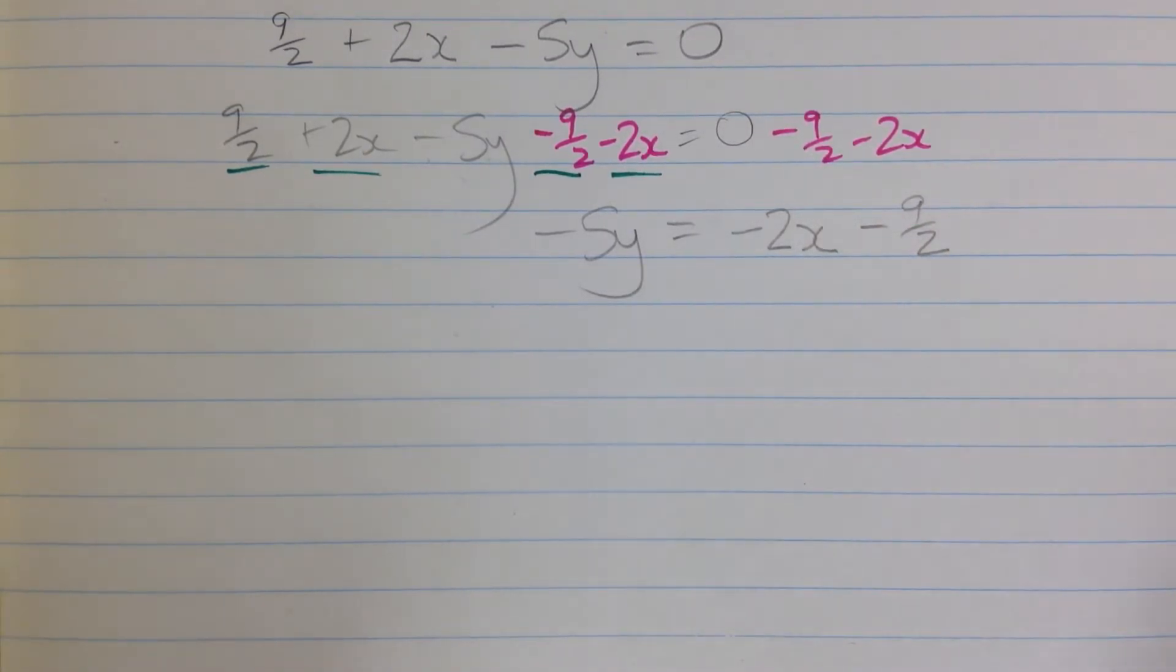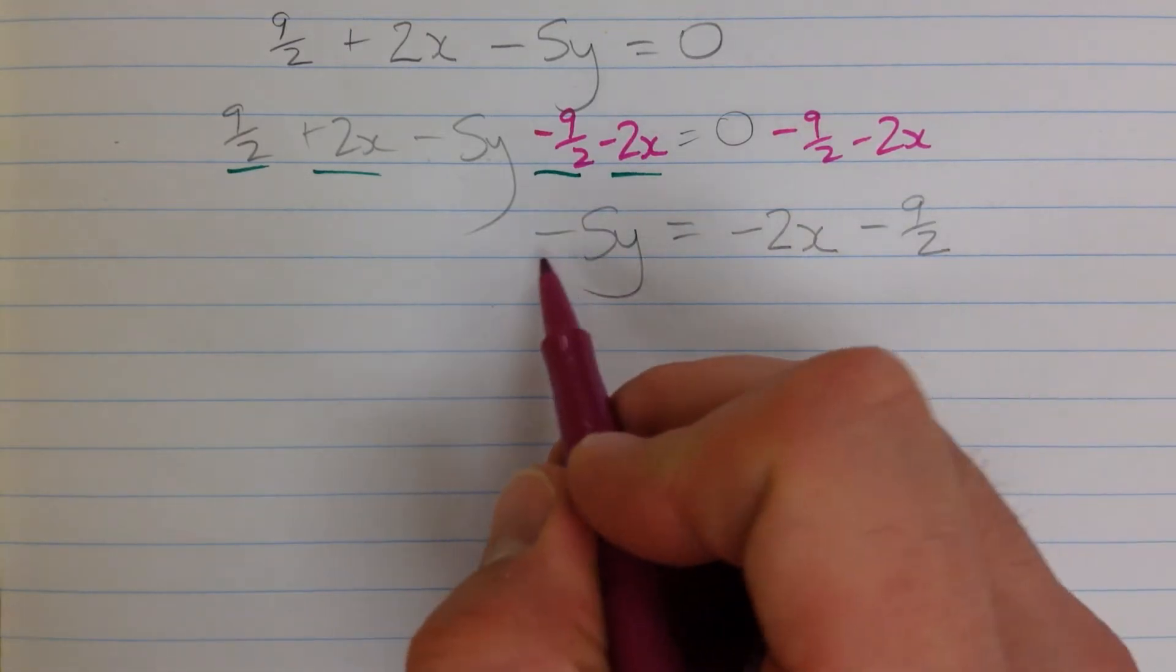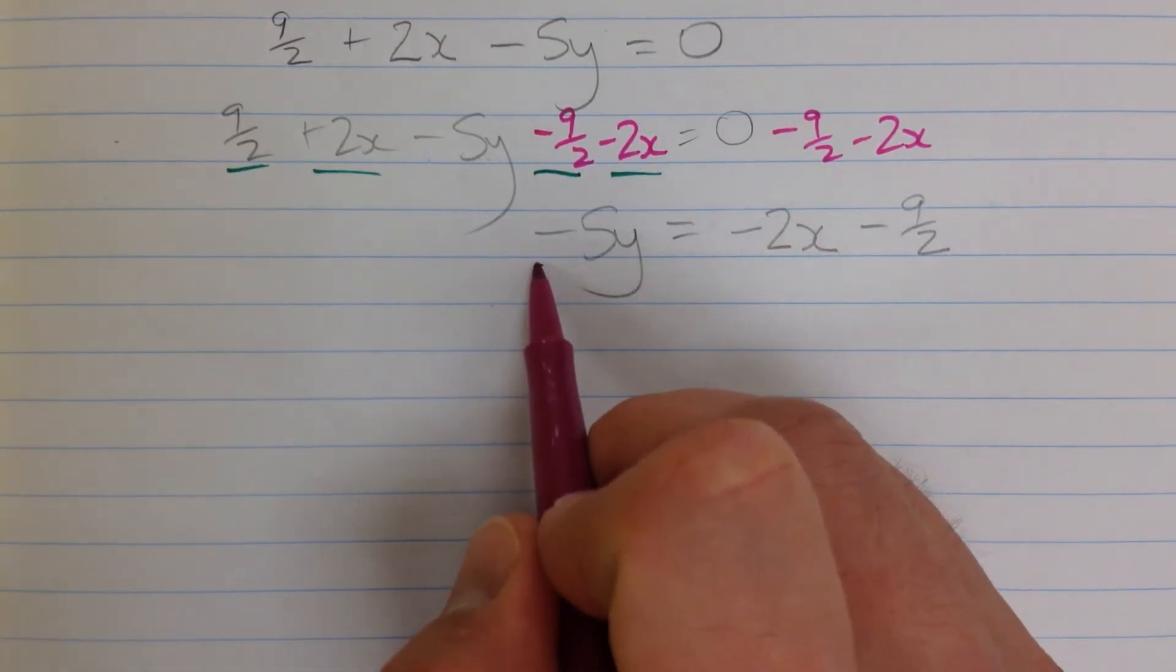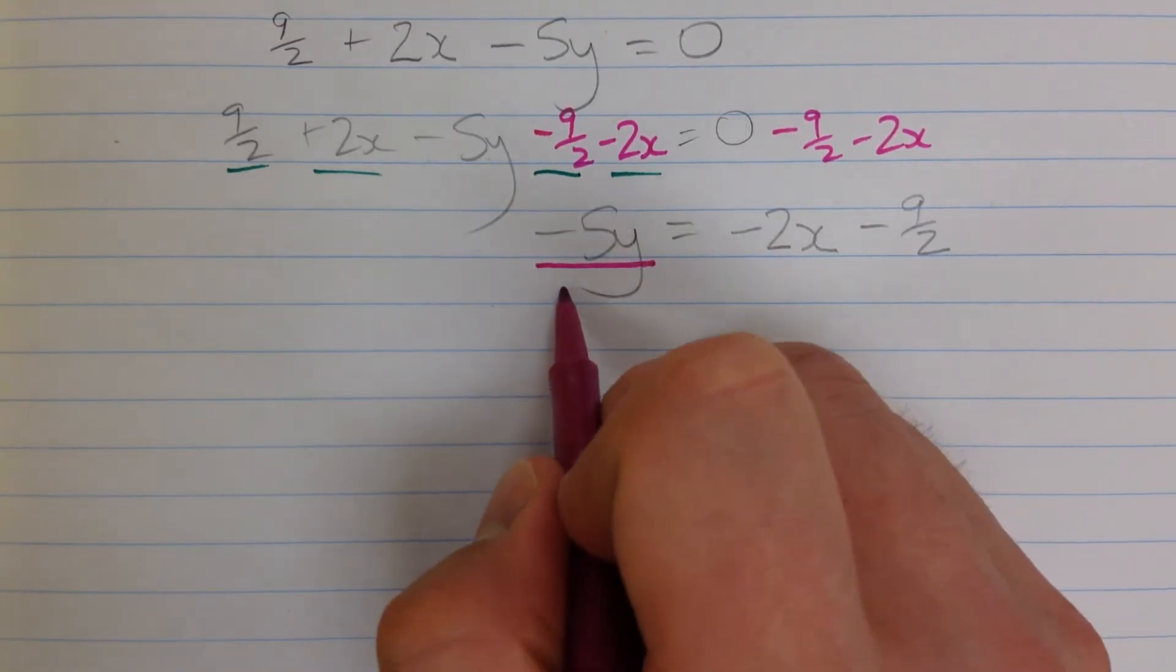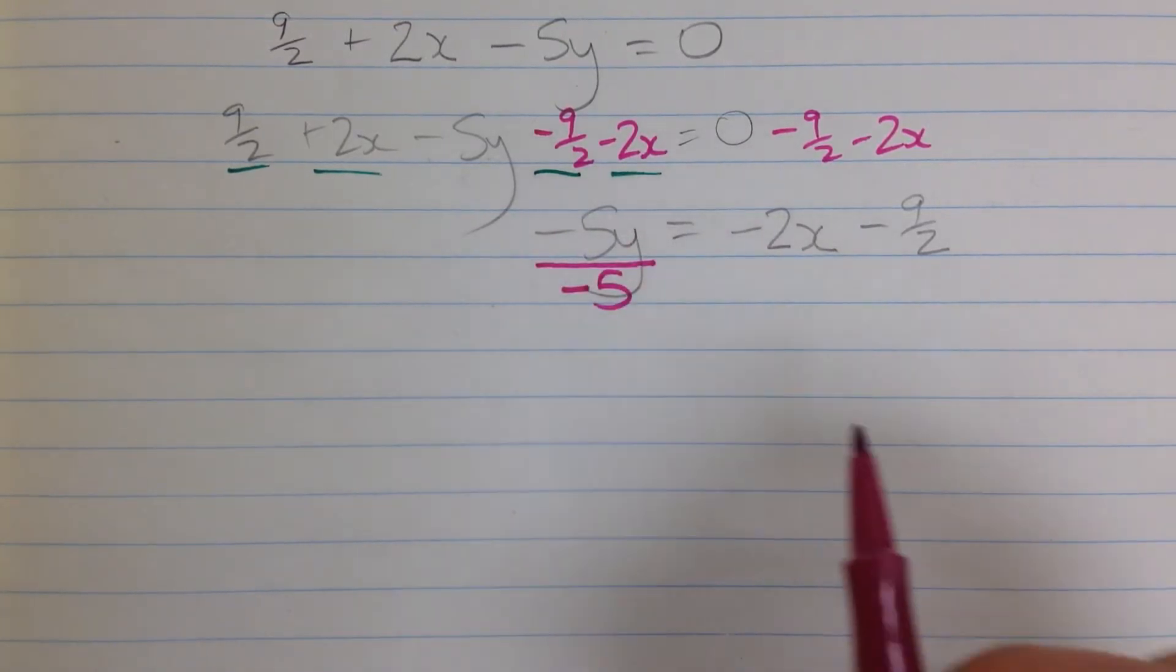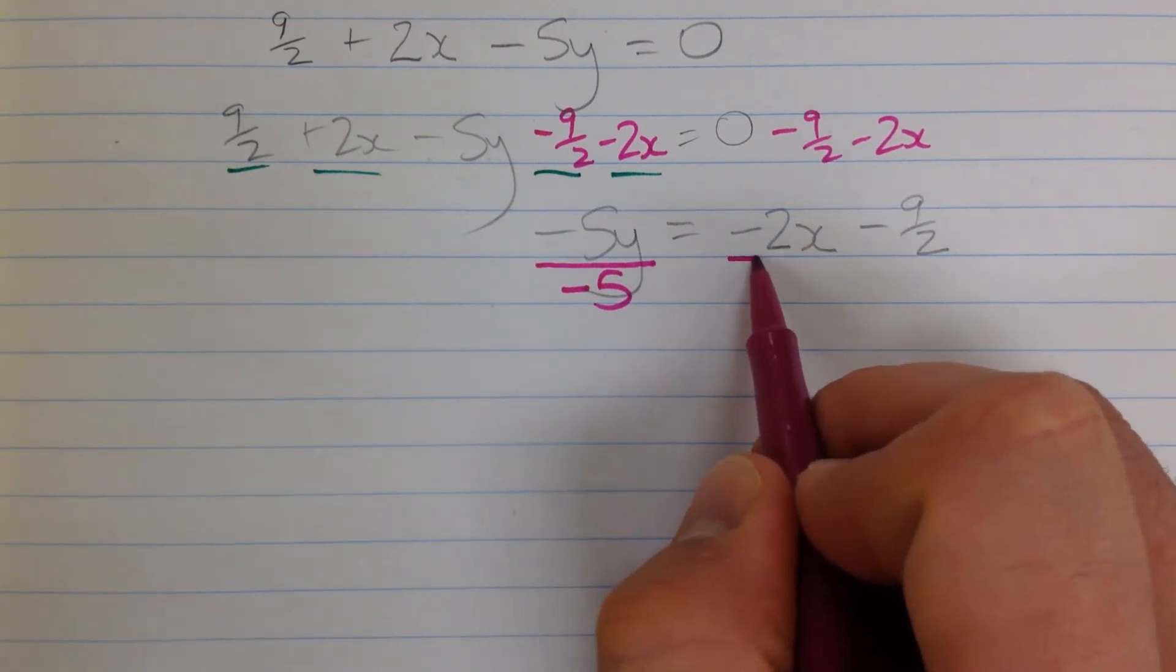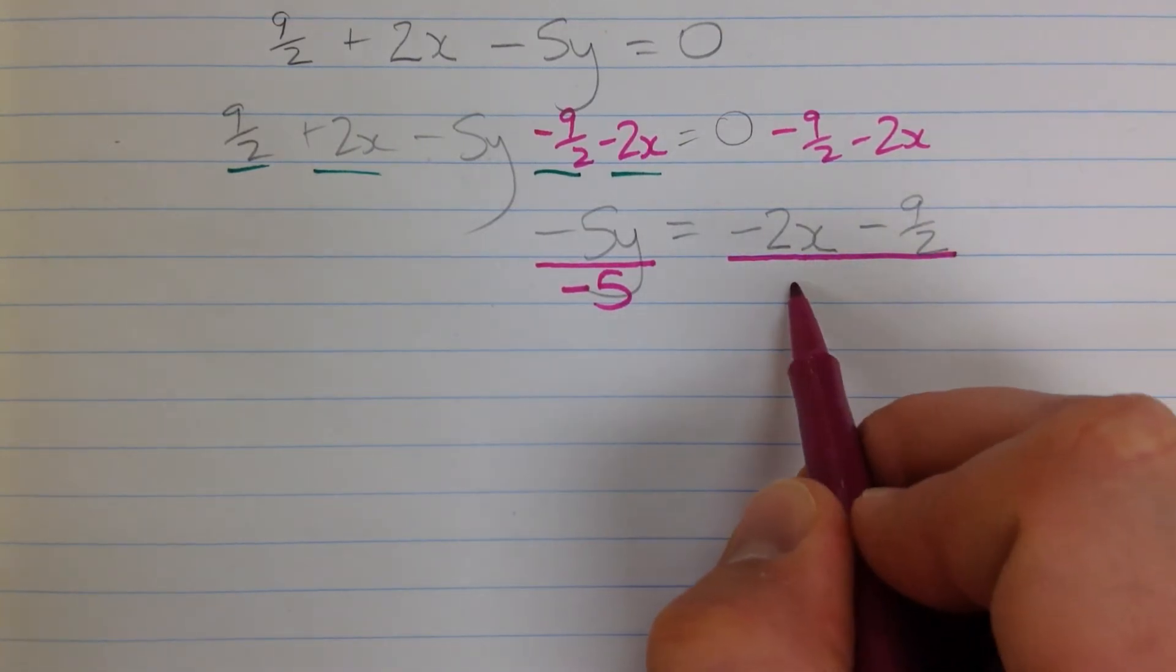Alright now, the only thing left to do is to clear off this negative 5. To do that, because this is multiplication here, I've got negative 5 times y, I'm going to do the opposite operation, and divide by negative 5, and I'll need to do that to both sides of my equation.